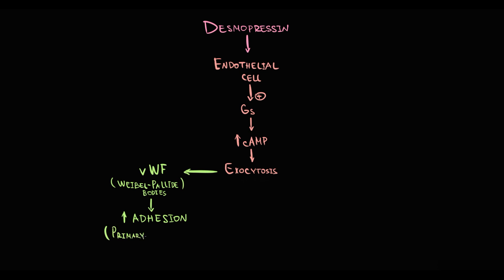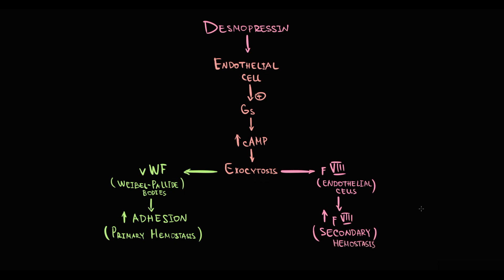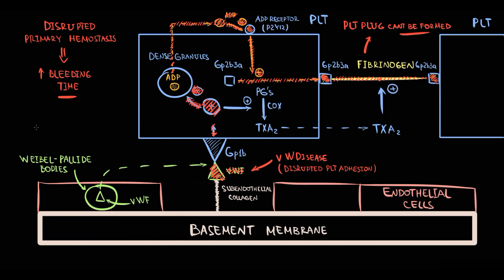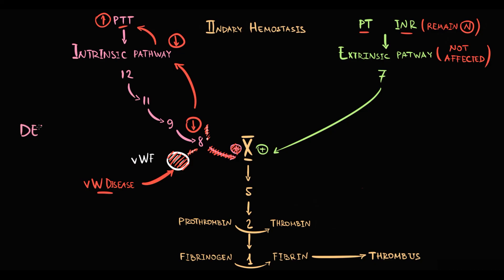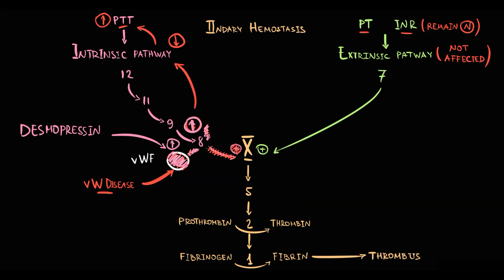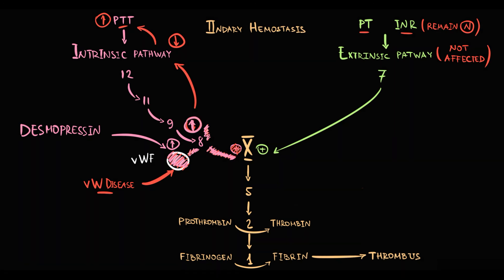Endothelial cells also contain some amount of factor 8, and in response to desmopressin, endothelial cells release some amount of factor 8 into the blood. So in primary hemostasis, desmopressin increases the amount of von Willebrand factor, thereby correcting adhesion, and as a result bleeding time normalizes. In secondary hemostasis, desmopressin increases both factor 8 and von Willebrand factor — the carrier protein for factor 8 — so the level of factor 8 increases, thereby correcting the intrinsic coagulation pathway and resulting in normalization of PTT.